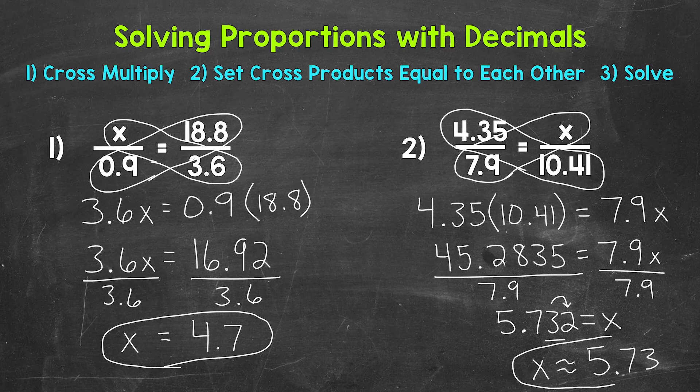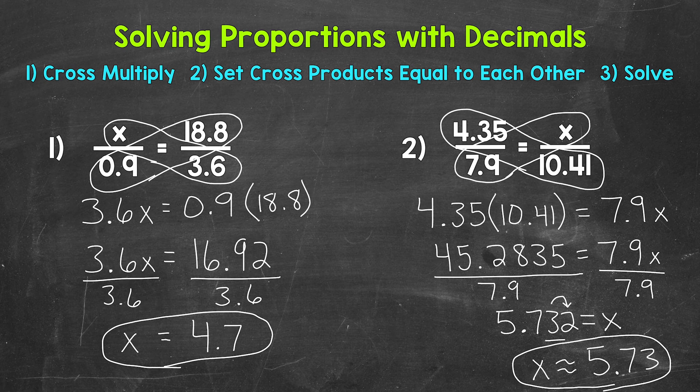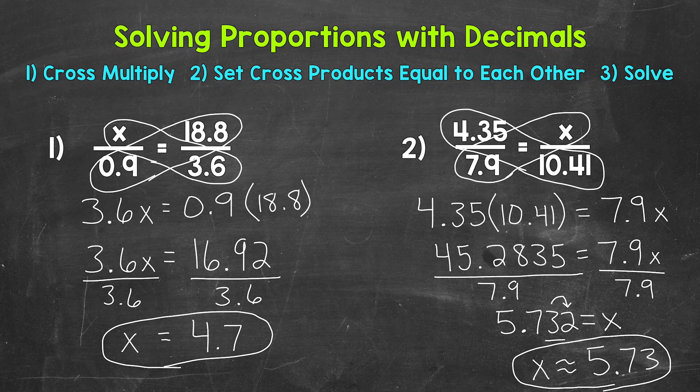And I used the approximate sign there because we had to round that decimal. That decimal ended up having repeating digits. So we needed to round. If you get a long decimal or a decimal that repeats, you can always round it to a given place.